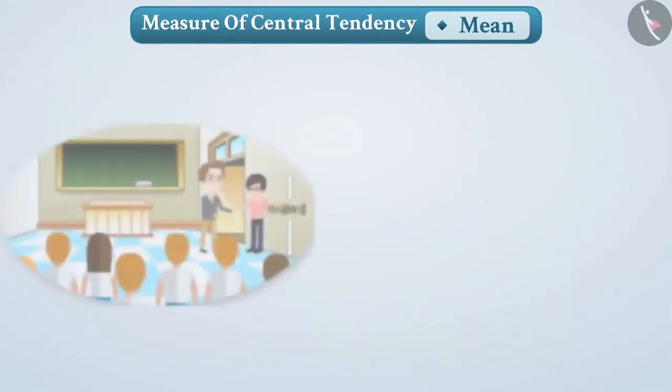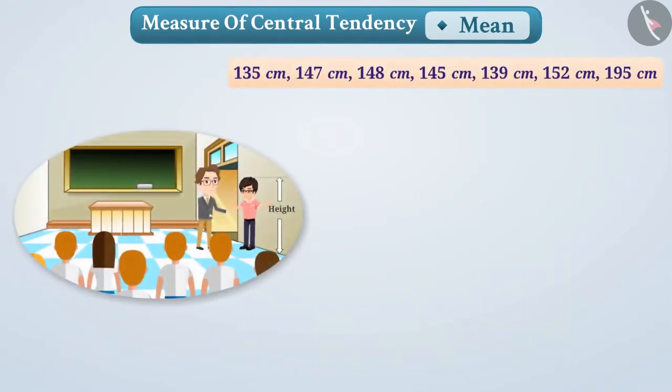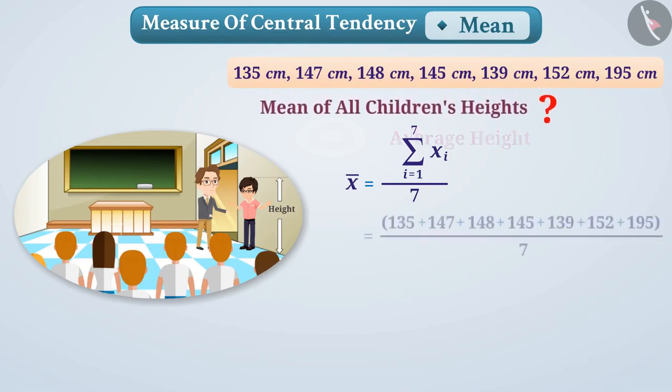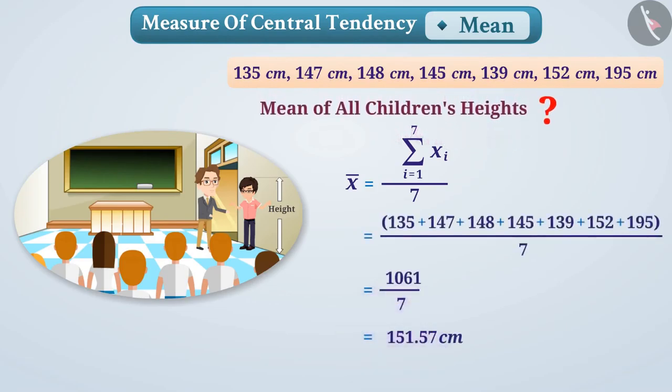For example, here are the heights of some children. To understand what their average height is, we have to find the mean of all children's heights. The mean is the only measure of central tendency that takes into account the total value of the data. Therefore, if we require a scale showing the reflection of the total value, in that case the mean would be a suitable measure.